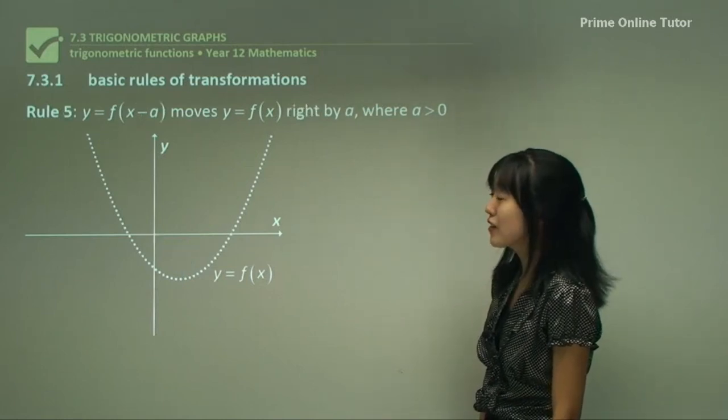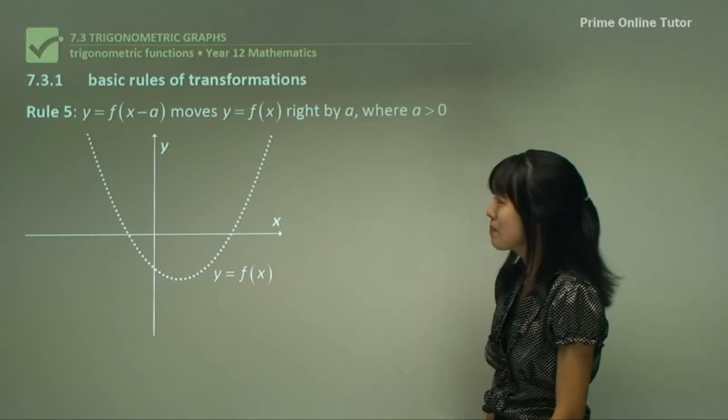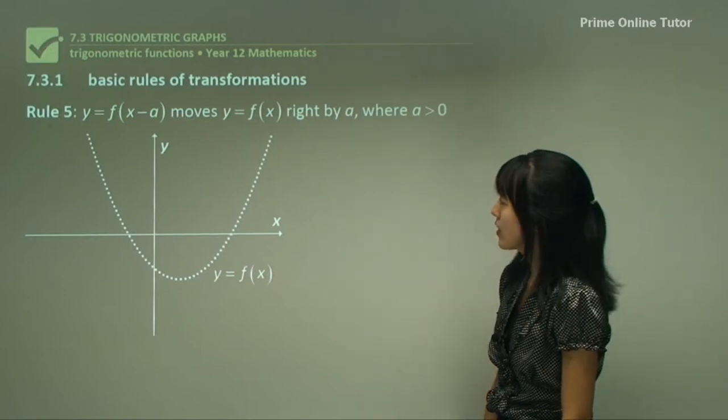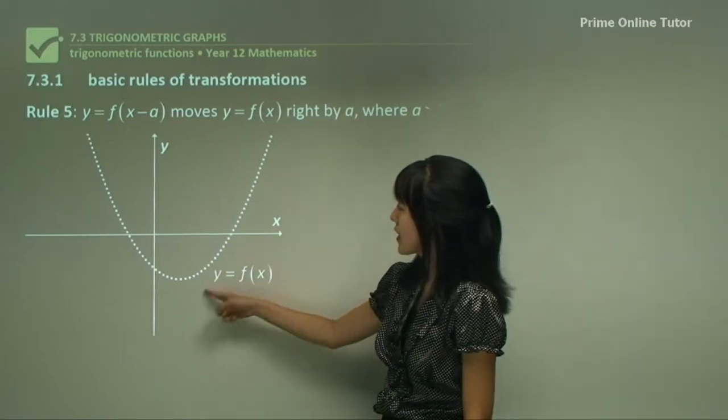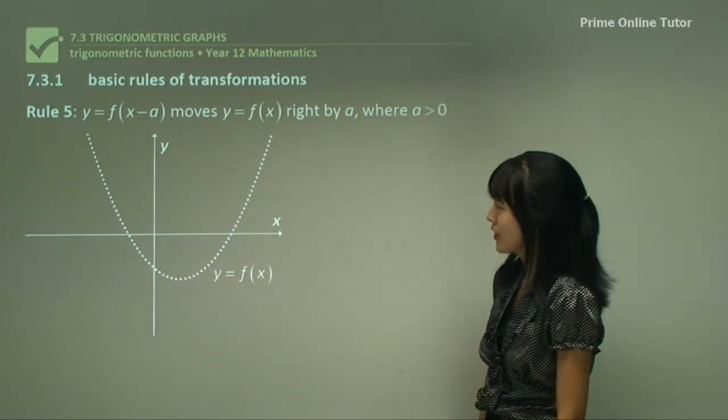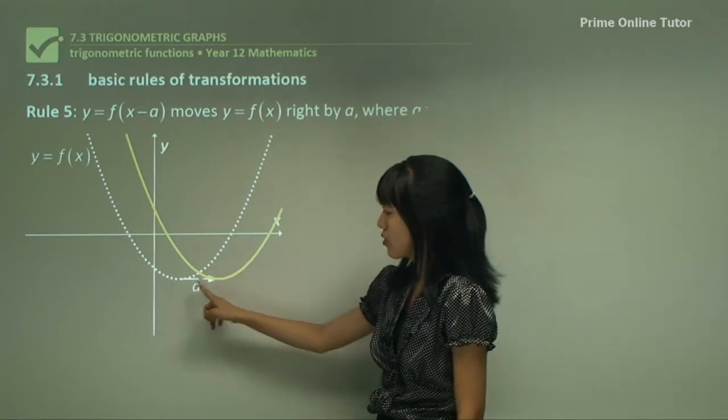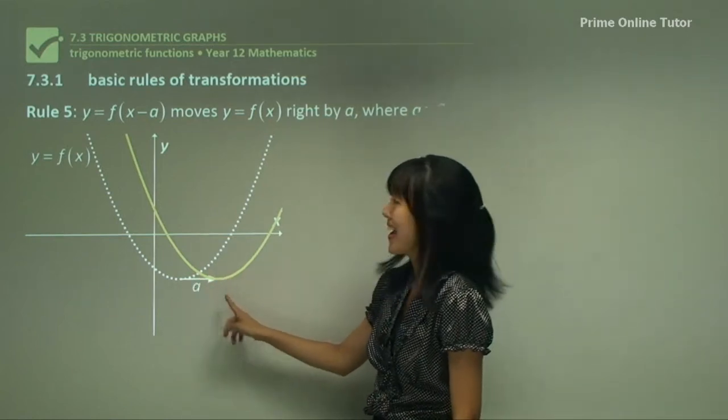Rule five, this is when y equals f of bracket x minus a. This would mean that this f of x graph would move right by a as shown in this next picture. See, original, and this is the new one that's shifted right by a.